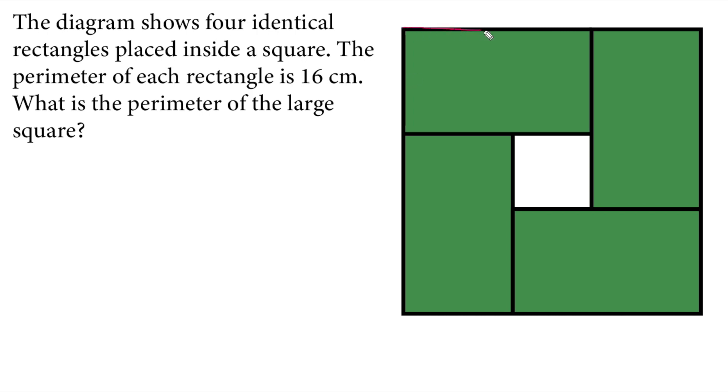We are given the perimeter of this single rectangle here. They are identical, so the perimeter is 16 centimeters. We don't know any side length, so I will call the short side x and the long side y. Therefore, x plus y plus another x plus y should equal 16 centimeters.